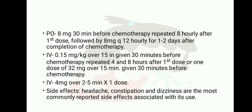Oral ondansetron: 8 mg, 30 minutes before chemotherapy, repeated 8-hourly after the first dose, followed by 8 mg every 12 hours for 1 to 2 days after completion of therapy. IV: 0.15 mg per kg over 15 minutes, given 30 minutes before chemotherapy, repeated 4 to 8 hours after first dose; or a single dose of 32 mg over 15 minutes, 30 minutes before chemotherapy. IV 4 mg over 2 to 5 minutes for post-operative use. Side effects: headache, constipation, and dizziness are the most commonly reported.